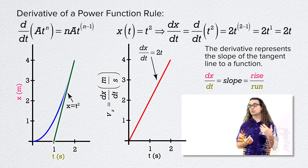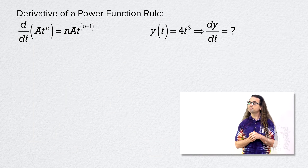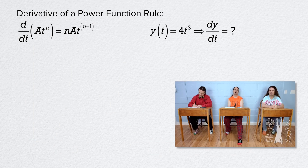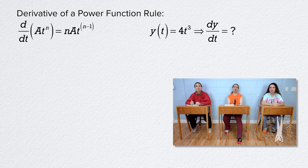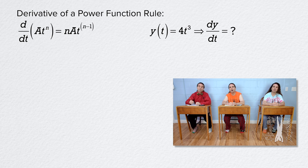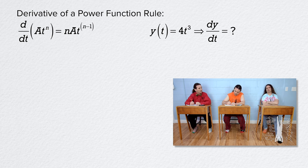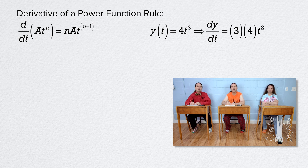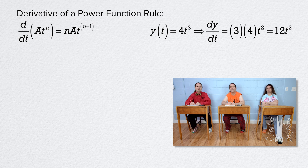What is the derivative with respect to time of this function? The function is y position as a function of time equals 4 times time to the third power, and we are determining the derivative of y position with respect to time. Well, n is 3 and a is 4. So the derivative equals 3 times 4 times time to the power 3 minus 1, or 2. So the derivative equals 12 times time squared.